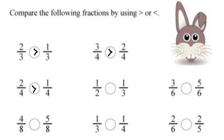1 by 2 and 1 by 3 — here the denominators are not same, but the numerators are same. So if the numerators are same, the fraction with the smallest denominator has the greater value. So 1 by 2 is the greater value and 1 by 3 is lesser. We will put the greater sign in the circle because the fraction with the smallest denominator has the greater value, and the fraction with the greatest denominator has the smallest value. So 1 by 2 is greater than 1 by 3.